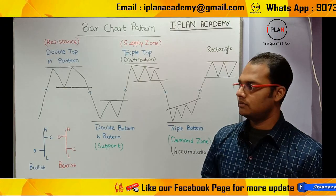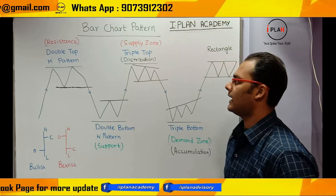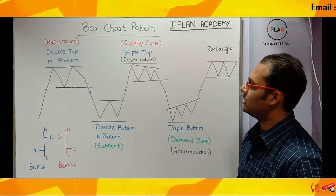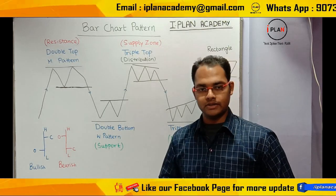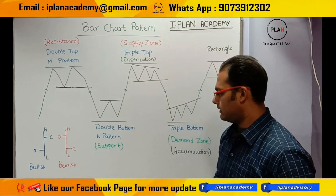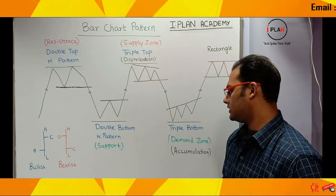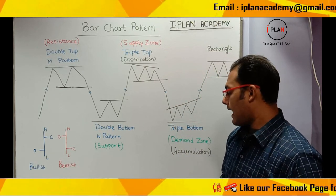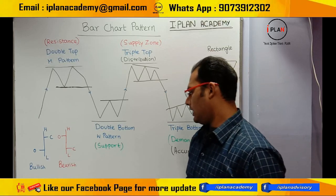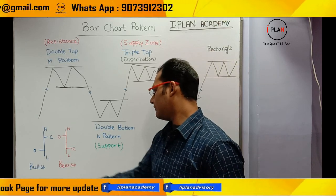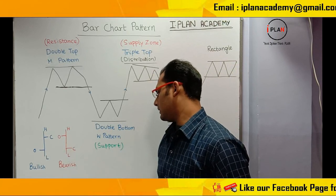When we talk about bar chart patterns, this bar chart pattern is basically analyzed by the help of a bar chart. In a bar chart, there are two kinds of bars. Number one is a bullish bar, which is denoted by the color blue. Number two is a bearish bar, which is denoted by the color red. In a bullish bar, closing is above open. And in a bearish bar, closing is below the open.